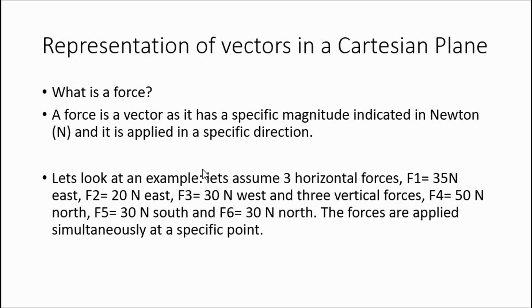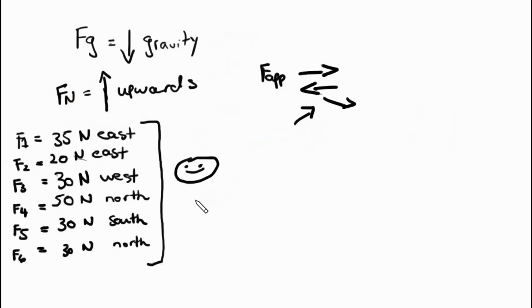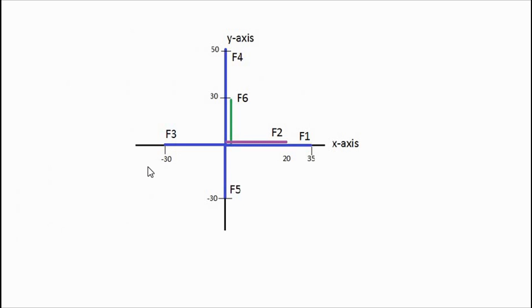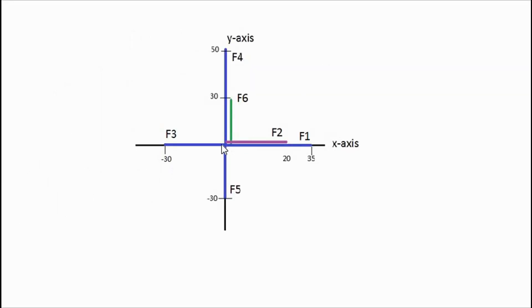They tell us that the forces are applied simultaneously at this point, and there we have it drawn on our Cartesian plane. I've drawn it for you in the notes to save some time. All my forces are depicted there. F4, remember we said, was 50 newtons north. F5 was 30 newtons south - negative 30 because I've chosen east and north as positive. F3 was 30 newtons west, and as I told you I decided that's going to be negative to indicate direction.